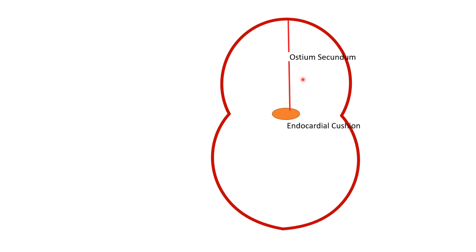Later on, this septum primum has fused with the endocardial cushion. Blood from the right atria must still go to the left atria, so there is soon a gap in septum primum called ostium secundum — the second opening in septum primum. Through this second opening, blood will go from the right atria to the left atria.